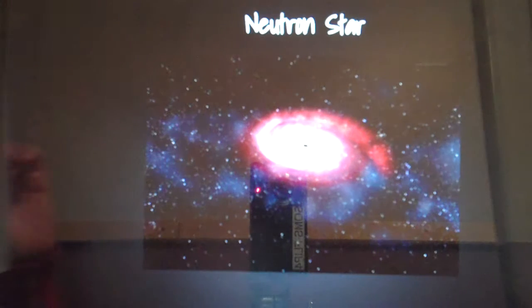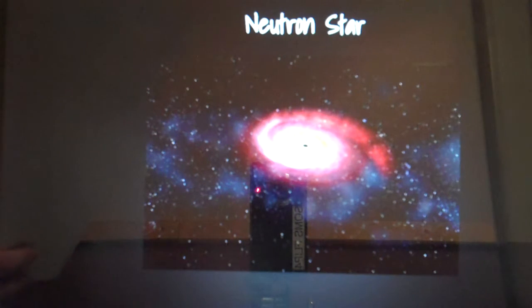That was a supernova. Neutron stars are formed when large stars run out of fuel and collapse. When a large star runs out of its fuel and it can no longer support its heavy weight, it collapses into a black hole.